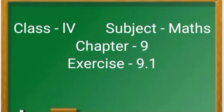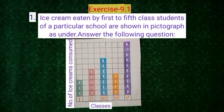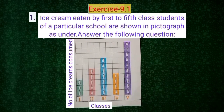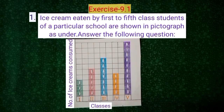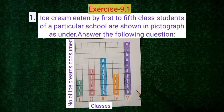Hello dear students, today we will solve exercise 9.1 from chapter 9 data handling. So let's start. We are going to solve the first question in which ice creams eaten by first to fifth class students of a particular school are shown in a pictograph. Firstly we will discuss about the pictograph and after that we will solve the questions.